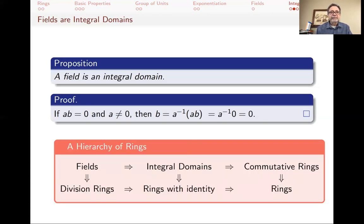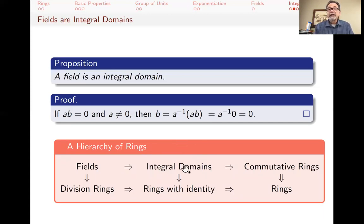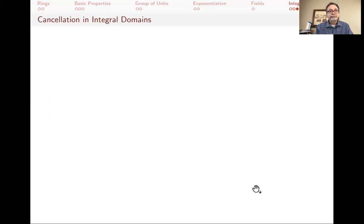We can organize the hierarchy: fields are the most specific — they're division rings with commutative multiplication. Fields and division rings are both integral domains that have identity. Integral domains are commutative. All of these are rings.